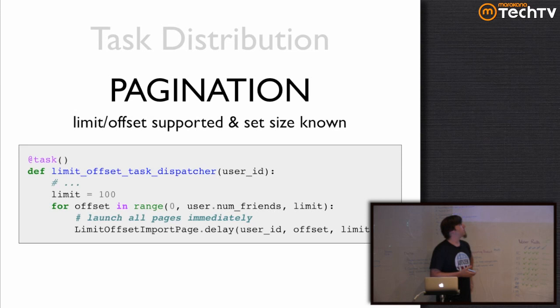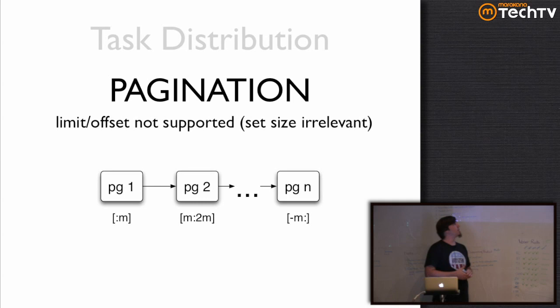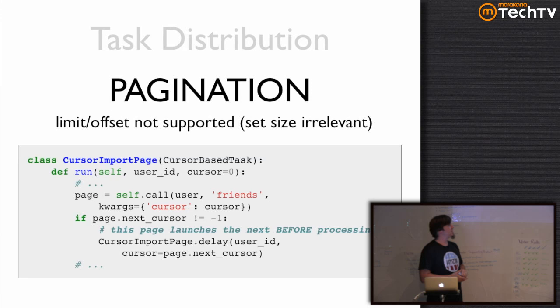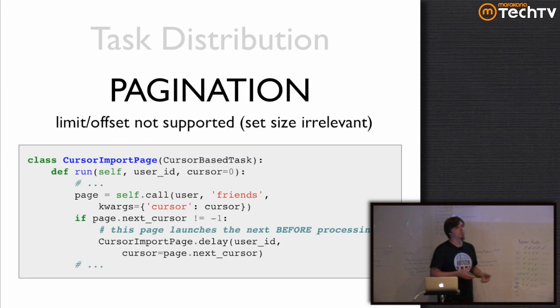That is very little code — this is the dispatcher that just goes through the range of offsets and launches pages. If you do not have limit-offset support, whether you know the set size is irrelevant, because you can't launch page two until you've done page one — page one includes the cursor value used to launch page two. It still makes sense to do this in separate tasks because you get to save the bit of work from page to page, but you can't run them in parallel. The task itself dispatches the next page, you start with a default cursor value, and you look for a sentinel cursor value that tells you you're done.